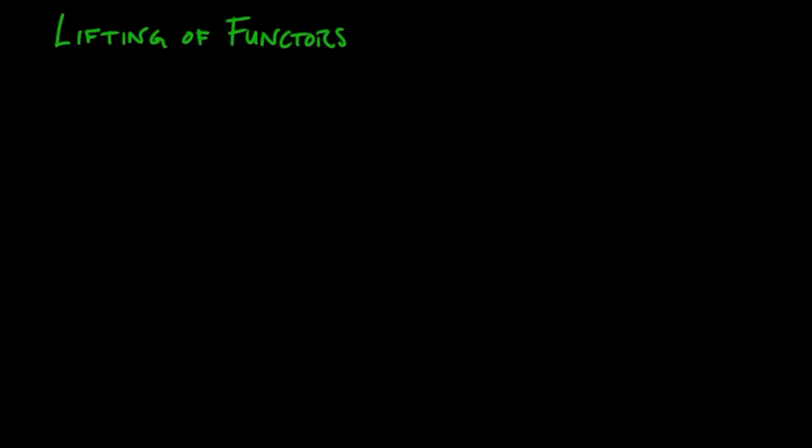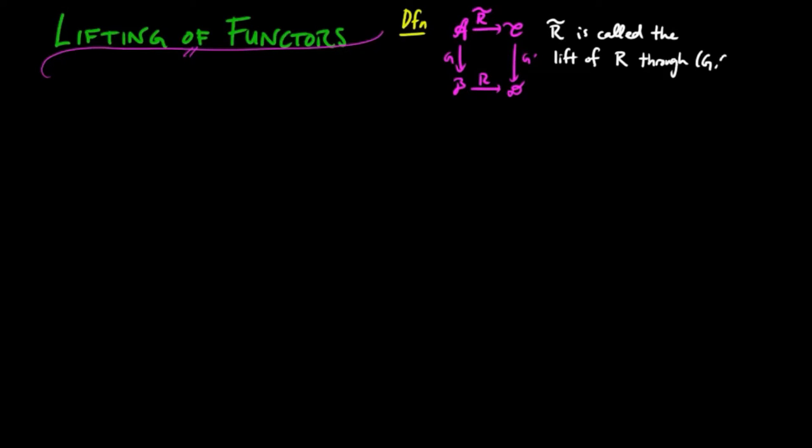In this video we discuss liftings of functors. So we start with the definition. If the following is a commutative diagram of functors, then r tilde is called the lift of r through g and g prime.